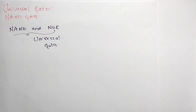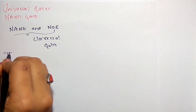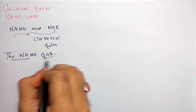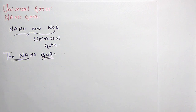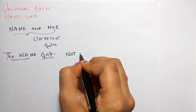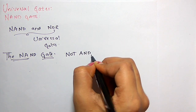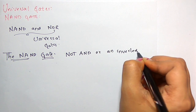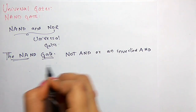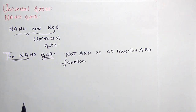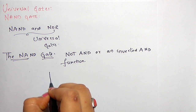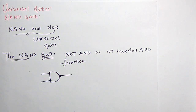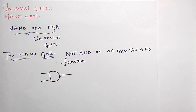Now we will see the detail about the NAND gate. The NAND gate is a NOT AND, or an inverted AND function. The standard logic symbol for the NAND gate is like an AND gate with a small bubble, which inverts the output of AND.